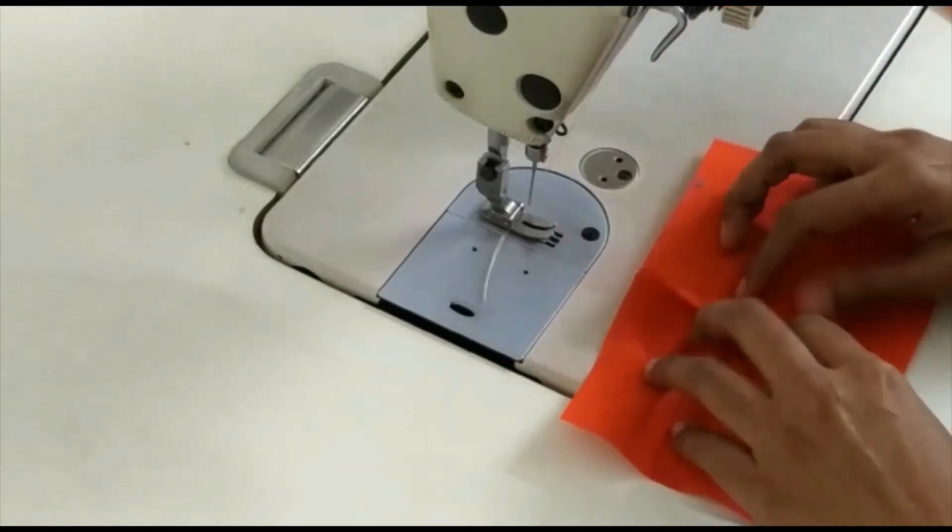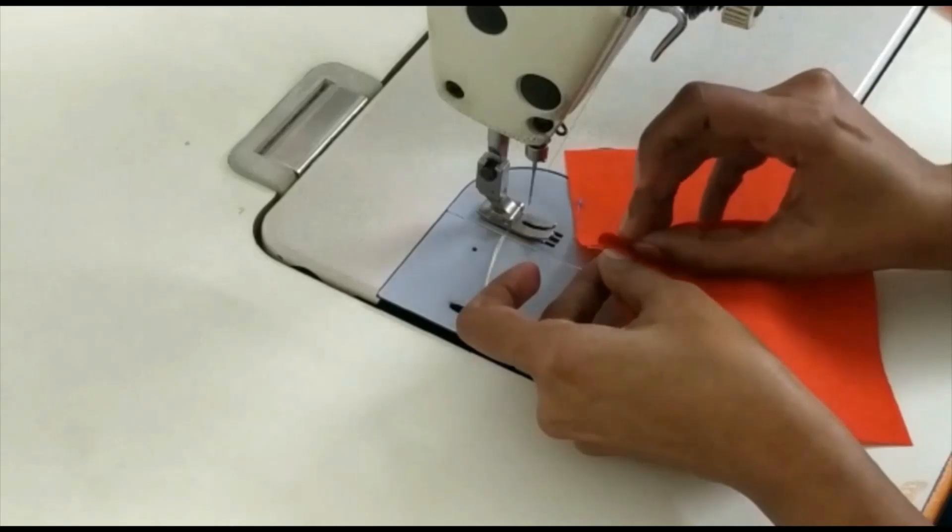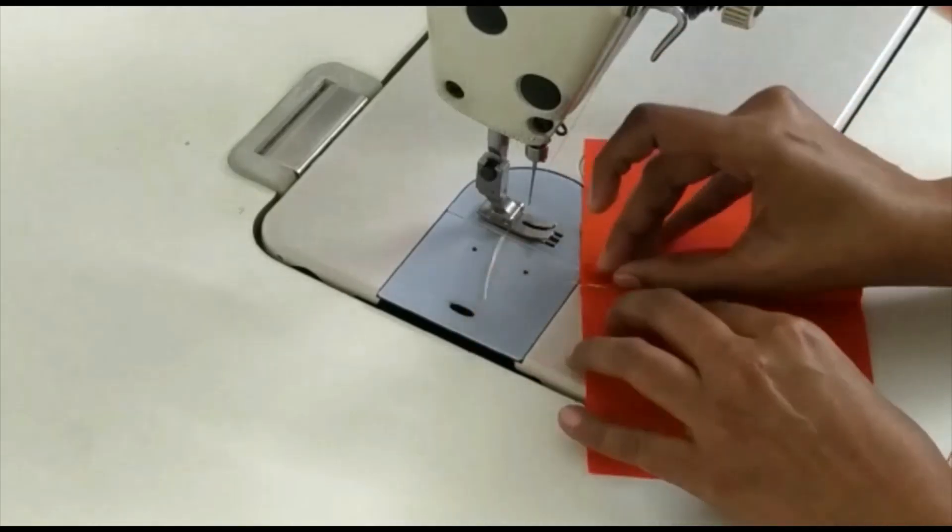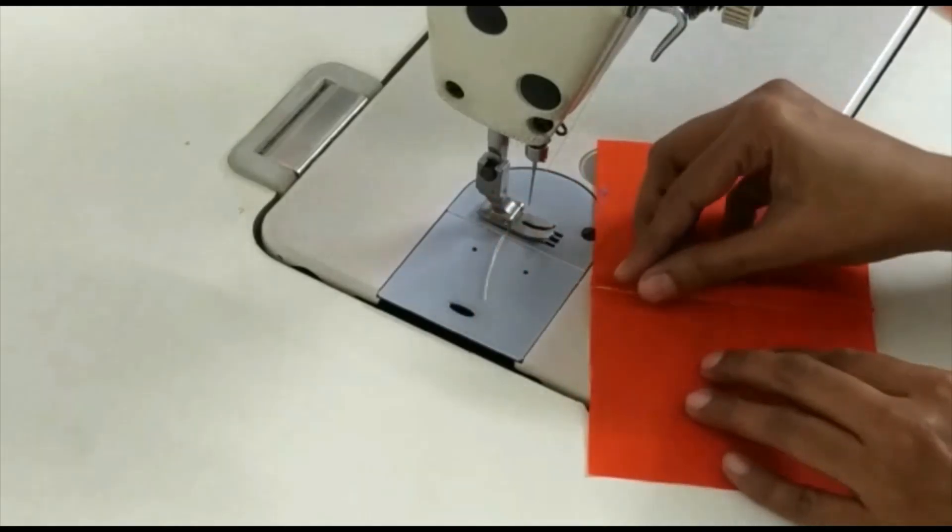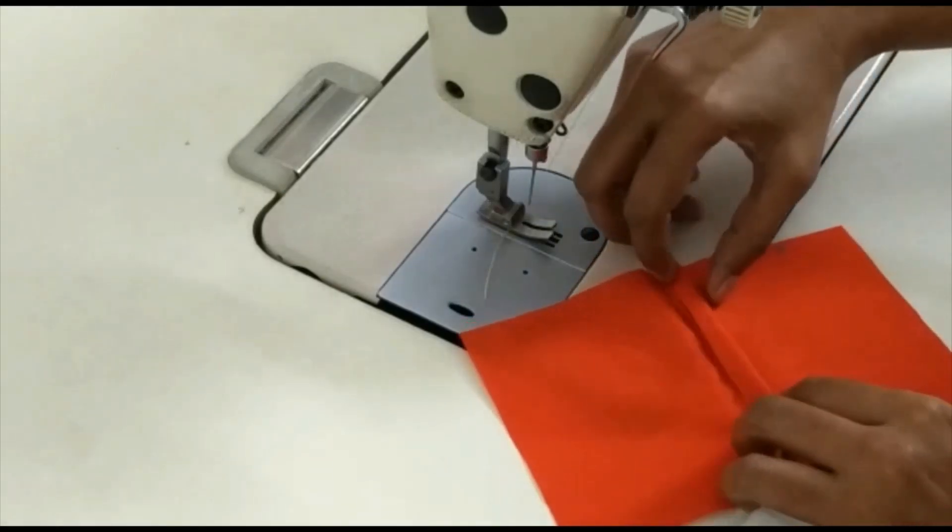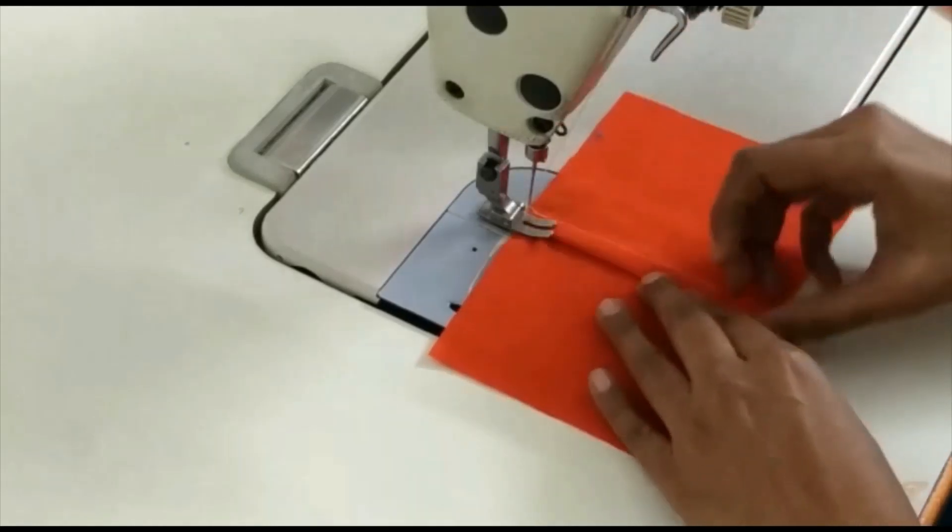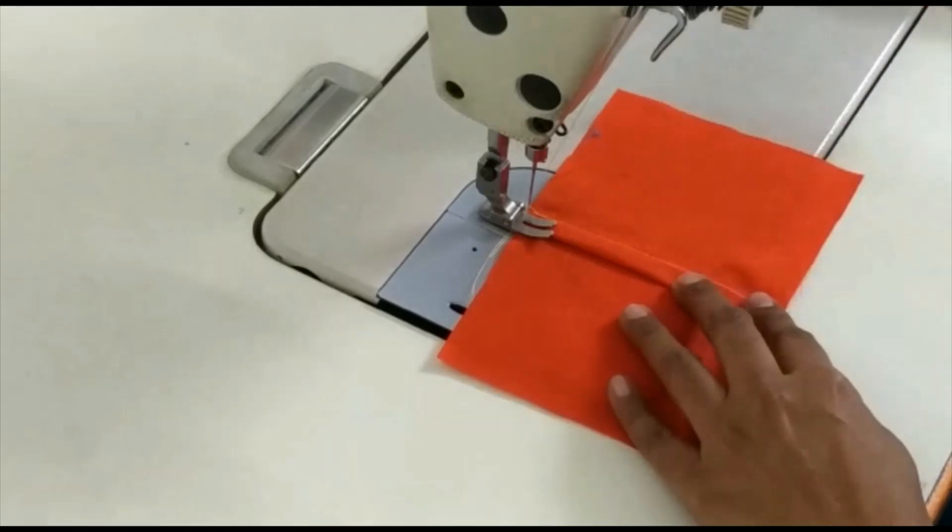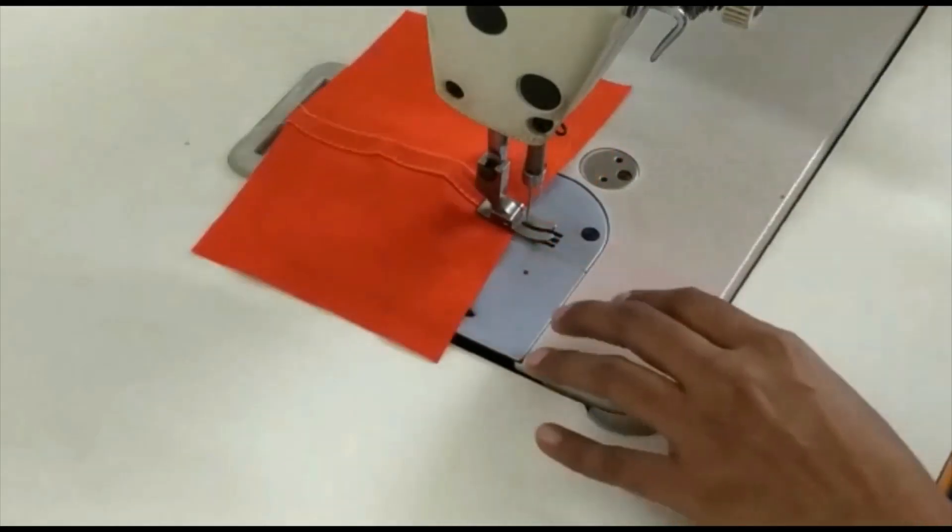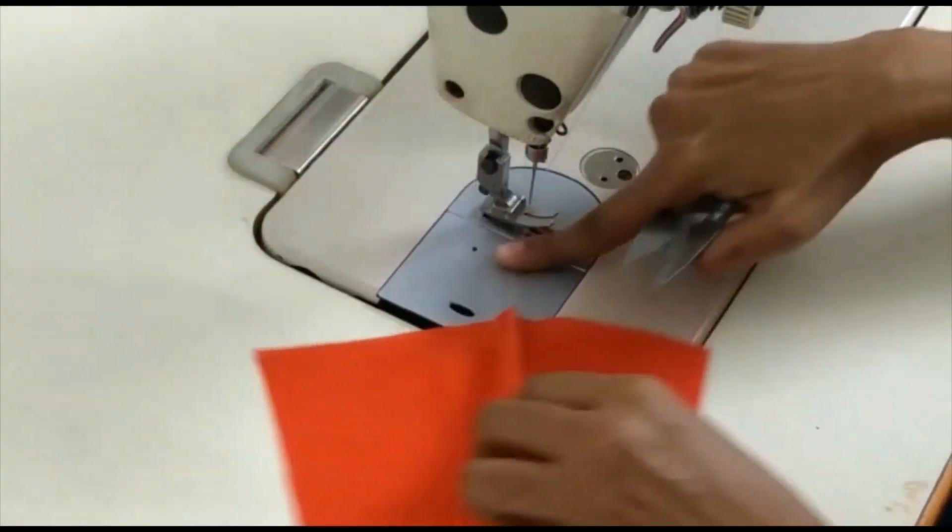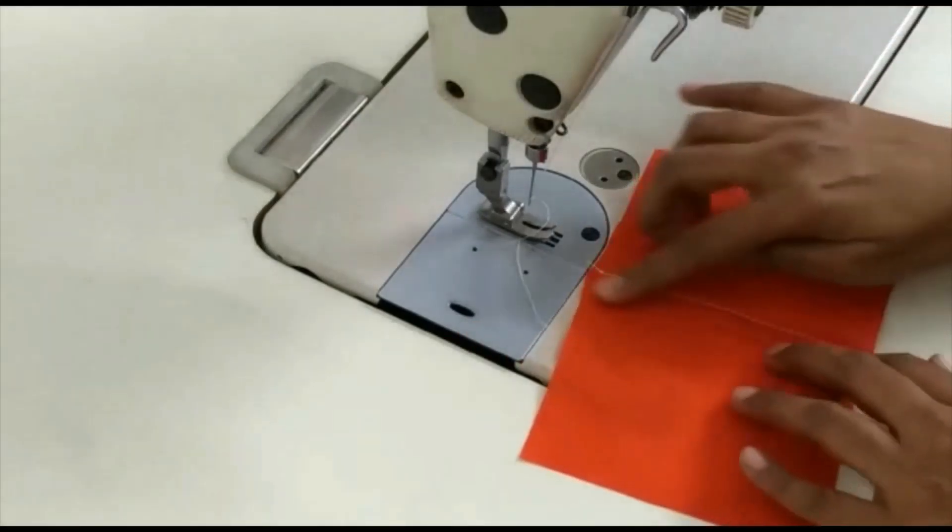Open the fabric in wrong side, fold the seam double the time. Now stitch on the folded edge. That's the final look.